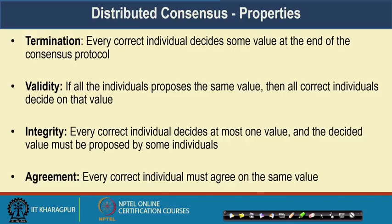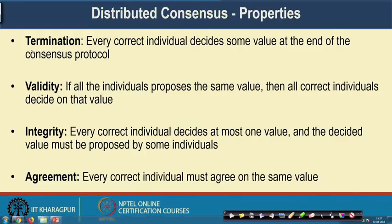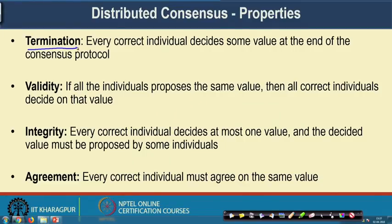Whenever we talk about distributed consensus protocols, we need to satisfy certain properties. The first property is called termination: every correct individual decides on some value at the end of the consensus protocol. That means every non-faulty node in the network must terminate the protocol and decide on one correct value. The second property is validity: if all the individuals propose the same value, then all correct individuals decide on that value. That is the basic idea of the validity property — if all individuals in the network propose a value of 10, then every correct node should come to a consensus with value 10. They should not deviate from that particular value.